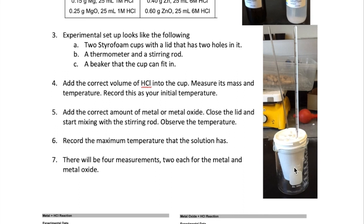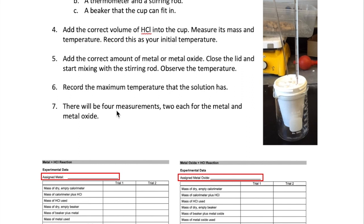First, you should add the correct volume of HCl into the cup and then measure its mass and temperature. This is going to be your initial temperature. Then you want to add the solid into the HCl, so either the metal or the metal oxide. Close the lid immediately and then start stirring. Observe the temperature. It should start rising. Record the maximum temperature you observe in your experiment. Then repeat the experiment with other samples. In total, there should be four measurements. You will do two repeats with the metal and two with the metal oxide.